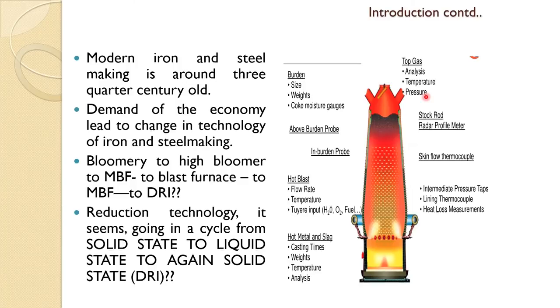Coming to the modern iron making, the development of modern iron and steel making is around only three-quarters of a century old — about 7 or 8 decades. Pyro metallurgy is the oldest branch of extractive metallurgy, and iron making falls under pyro metallurgy.